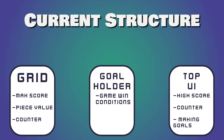Before the refactor, our game structure had a lot of important information spread between three different objects. The grid held information about scoring, counter, and what level we were on. The goal holder held information about whether or not the game was won by checking its children objects to see if the goals were met. And the top UI held information about the score, and it was also responsible for getting the high score. By having this work the way it is right now, every object needs to communicate with every other object to know what's going on. The grid needs to contact the goal holder to find out if the goals were met, and the top UI needs to get information from the grid about what the high score should be and what the current score is.